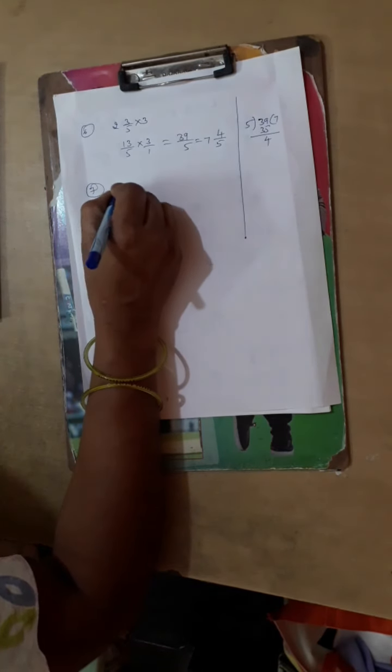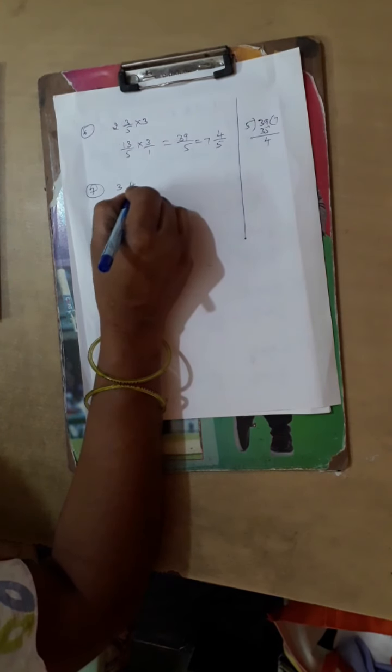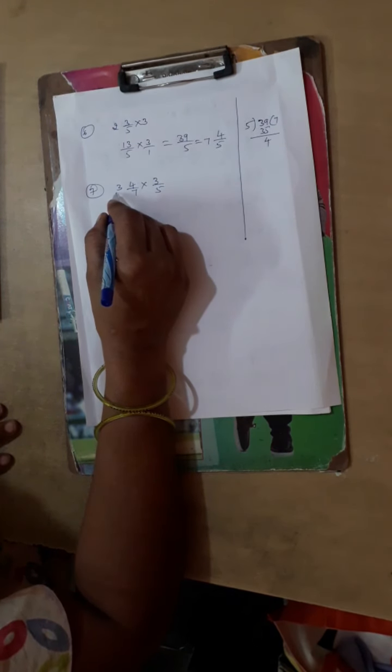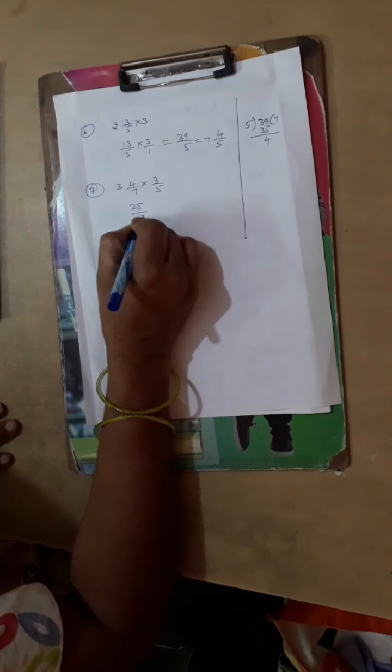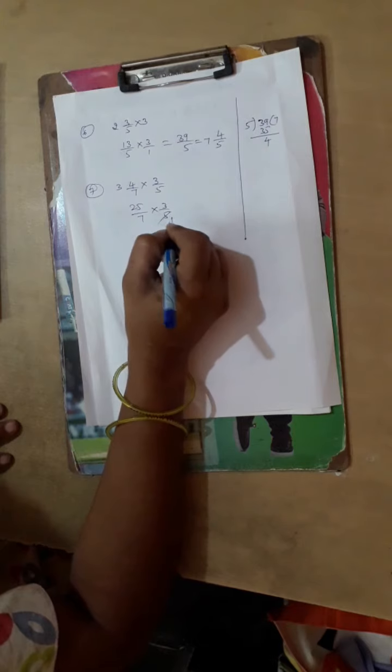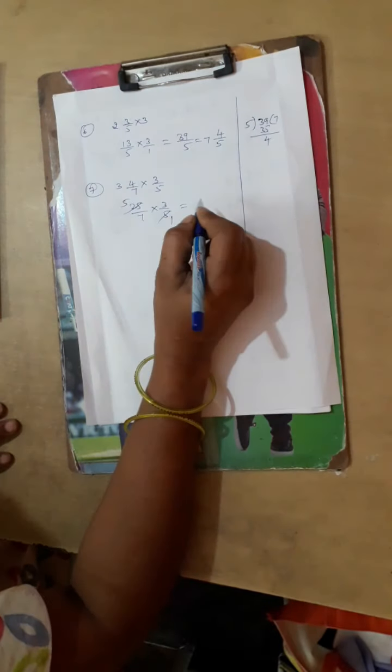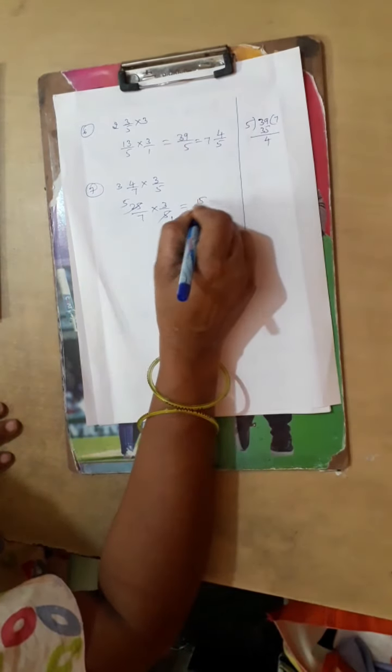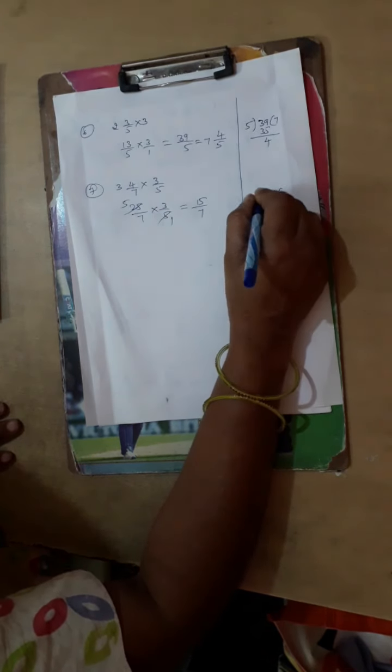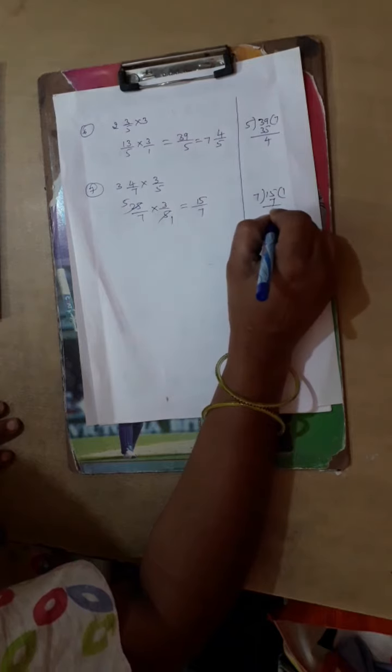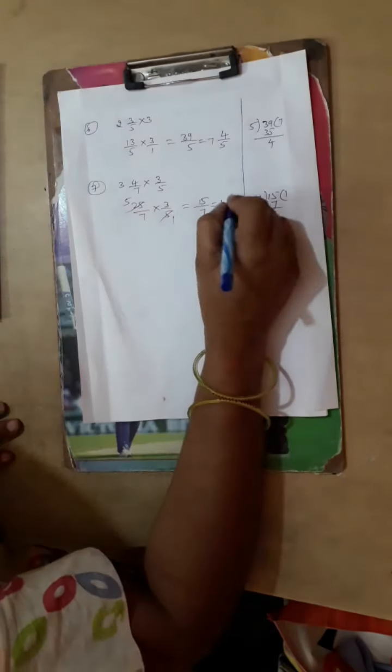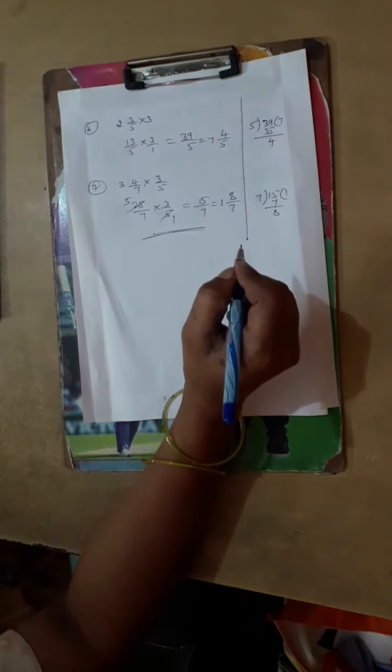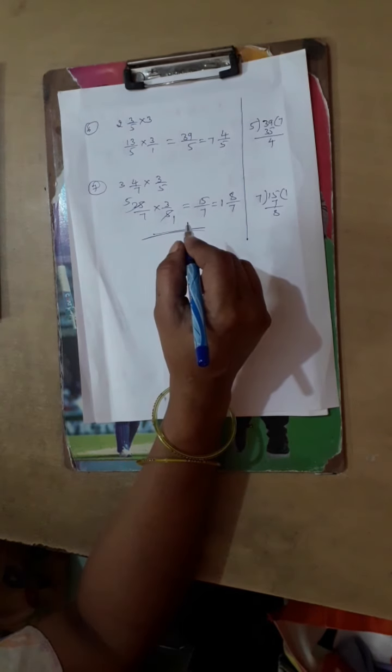Then 7th one. This is the last problem in this mind. 3 4 by 7 into 3 by 5. So let us multiply: 7 times 3 is 21, 21 plus 4 is 25 divided by 7 into 3 by 5. So let us cancel 5. Then multiply numerator with numerator and denominator with denominator: 5 times 3 is 15 divided by 7. So divide this 15 by 7. You will get 7 times 1 is 7, the remainder will be 8. So 7, 1, the 8 will be remainder.